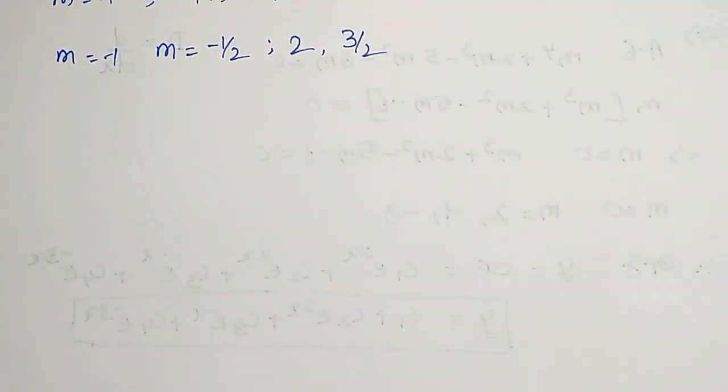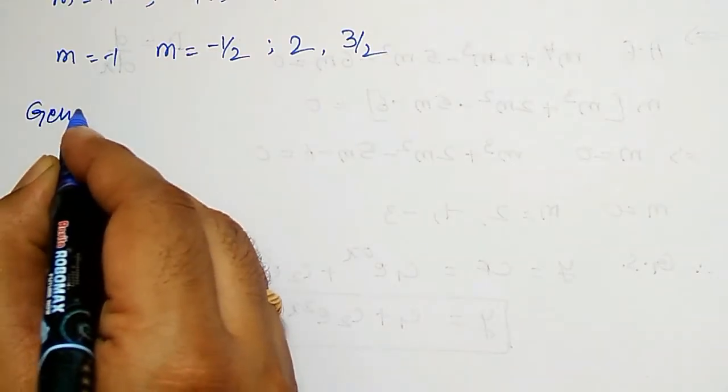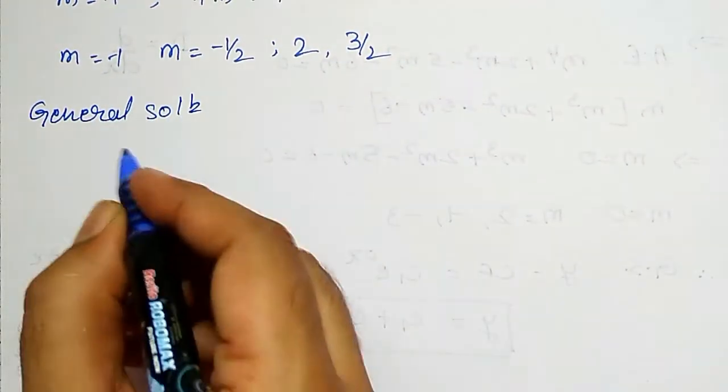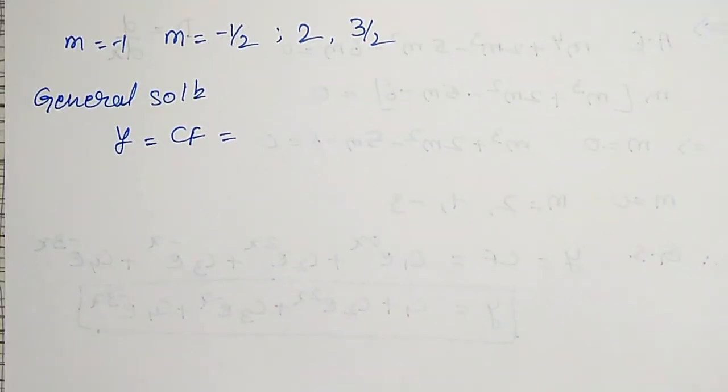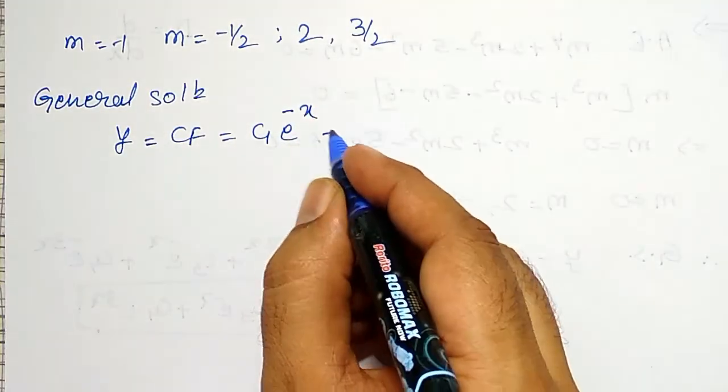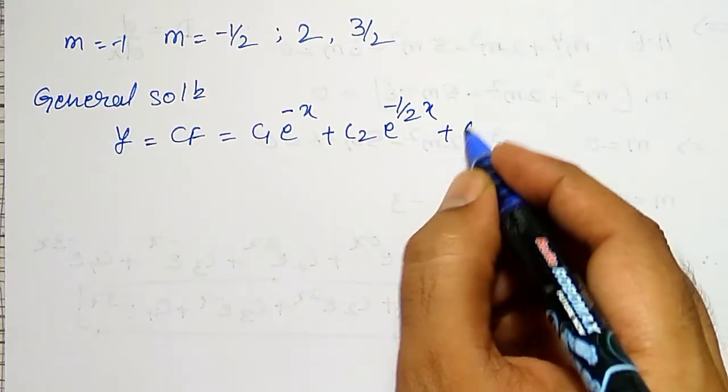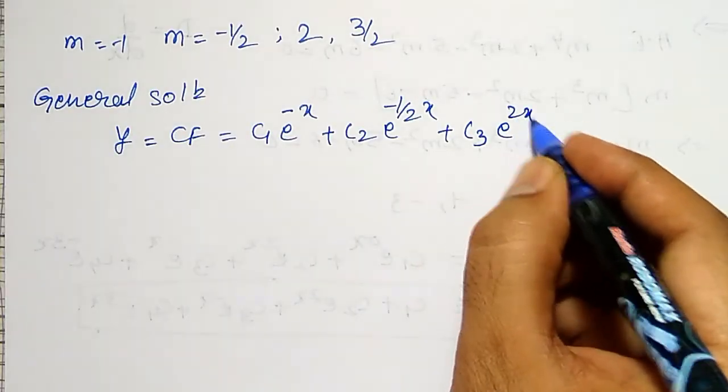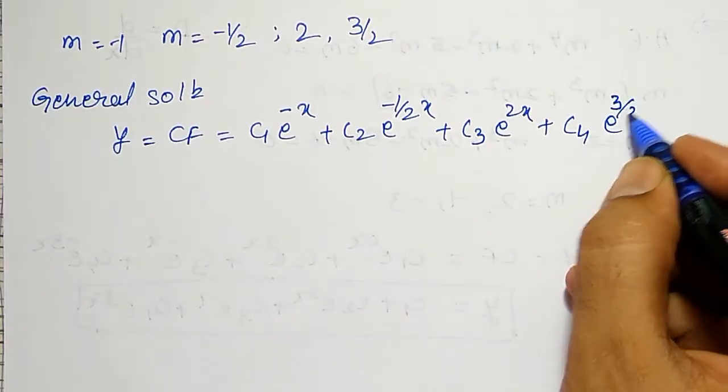Therefore, the CF, general solution: y = CF, complementary function, I can write it as C1·e^(-x) + C2·e^(-x/2) + C3·e^(2x) + C4·e^(3x/2).